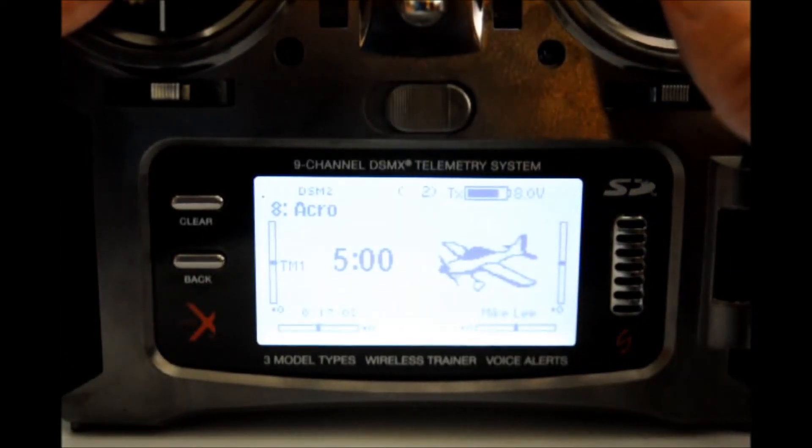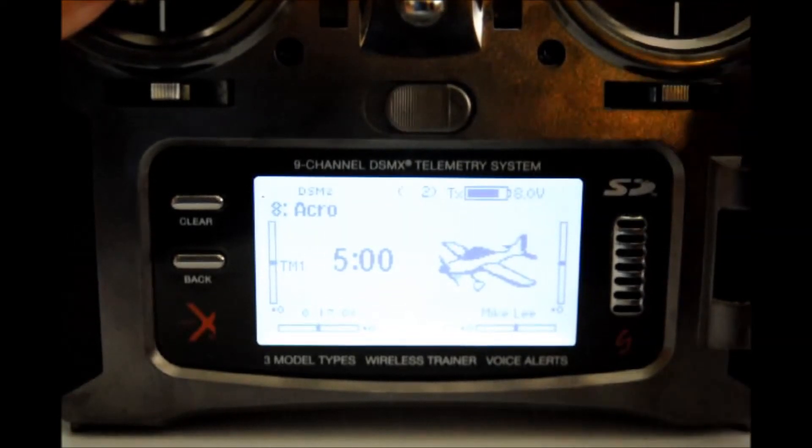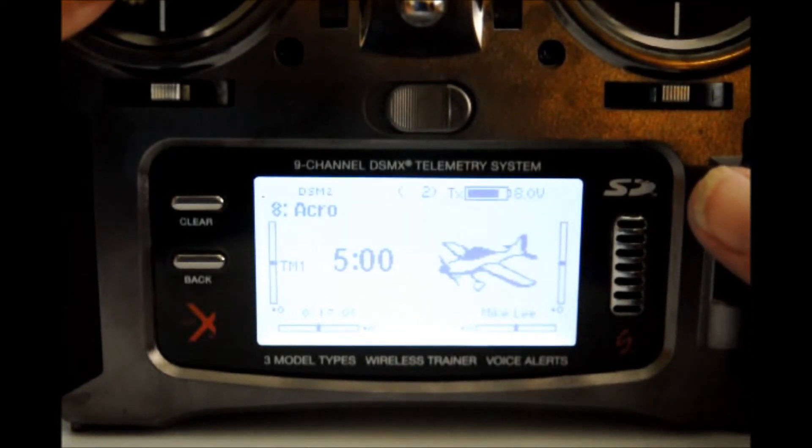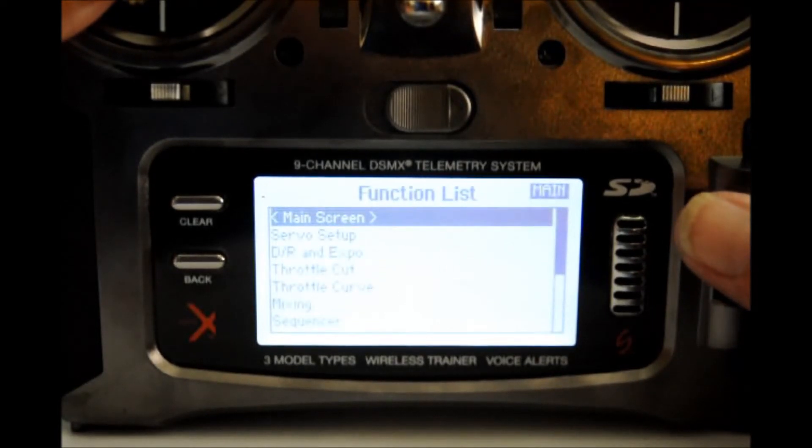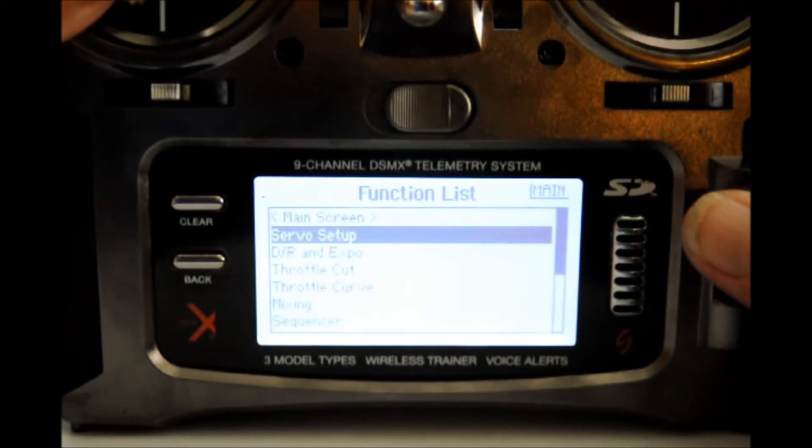The transmitter we're using is the Spectrum DX9 transmitter. With the radio turned on, depress the scroll switch once to get into the function menu. From there, scroll down to the servo setup and depress the scroll switch once.